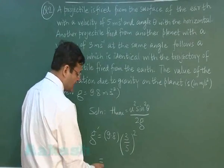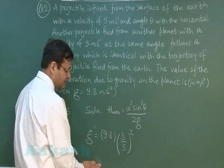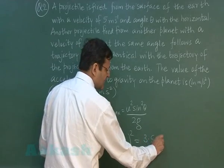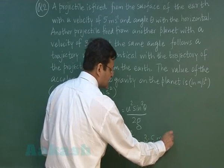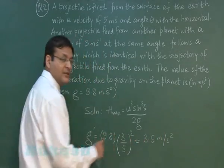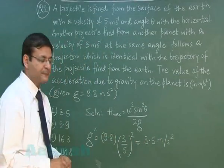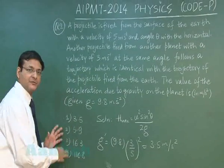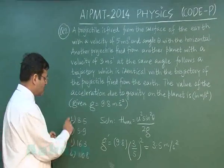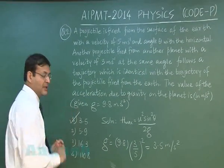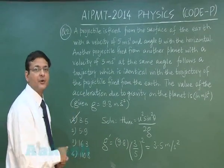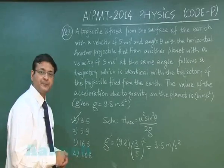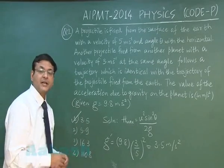Doing the calculation gives 3.5 m/s². So the correct option for question number 2 is 3.5, that is the first option.